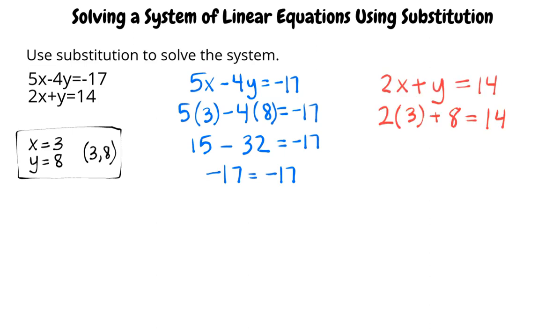As for the second equation, I substitute 3 for x and 8 for y. This gives the equation 2 times 3 plus 8 equals 14. 2 times 3 is 6. And 6 plus 8 is 14. 14 is equal to 14, so this is also a correct solution for the second equation.